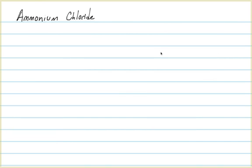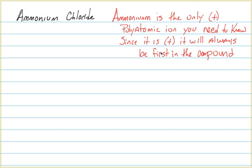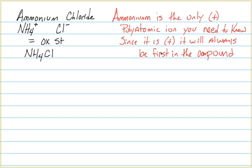A special consideration: ammonium chloride. Ammonium is the only polyatomic cation we'll commonly see — there are others, but this is the only one that occurs in the lab compounds we'll use. We treat it the same way as before. Ammonium has a plus charge and chloride has a minus charge; since they are equal in oxidation state, we simply write NH₄Cl. We don't need parentheses around the ammonium because we only have one of them.